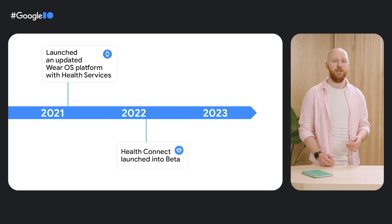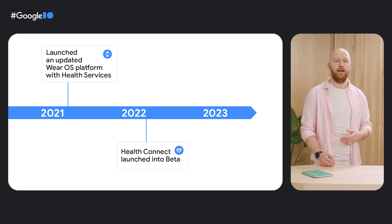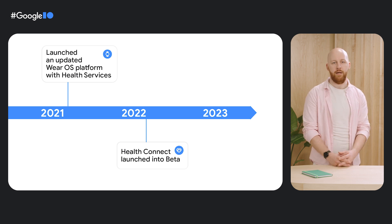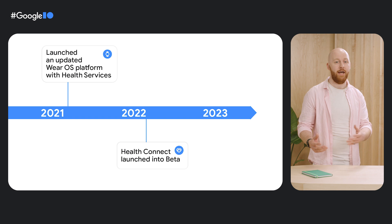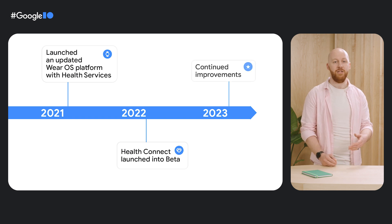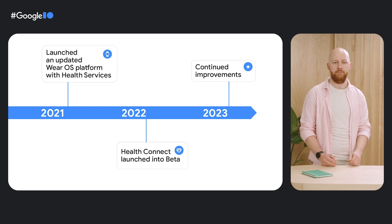And last year, we launched Health Connect, an on-device health data store that provides APIs which enable users to store and share data between their favorite Android apps, including Samsung Health and Fitbit. And this year, we've been hard at work continuing to improve our Android health offering. So now on to our updates.